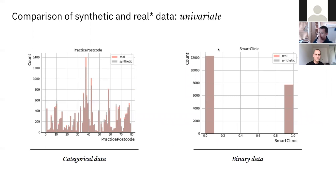Here we have more features. On the left we have categorical data — the practice postcodes with about 80 possible values — and on the right binary data. For the categorical data, there's quite a high overlap between real and synthetic distributions. For the binary data, the result is spot-on in terms of distributions — you can barely see any difference between the real and synthetic data in terms of these proportions. This is a univariate assessment showing that column by column, the synthetic data looks quite good.